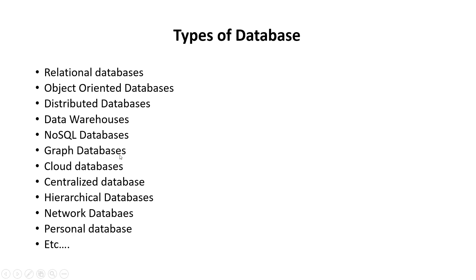These are some types of databases: relational database, object-oriented database, distributed databases, data warehouses, NoSQL databases, graph databases, cloud databases, centralized databases, hierarchical databases, network databases, personal database, and more.